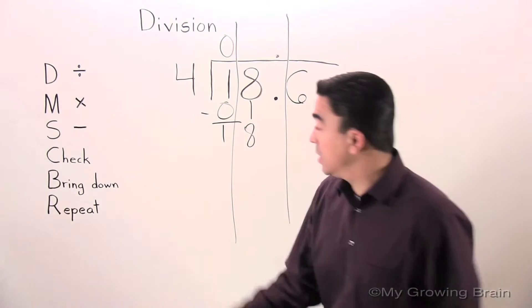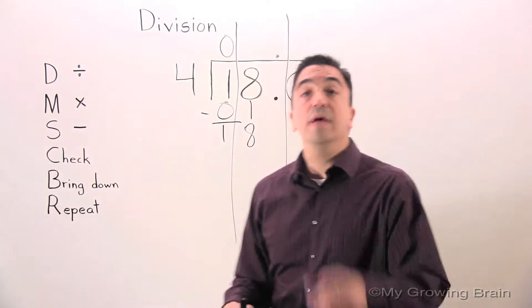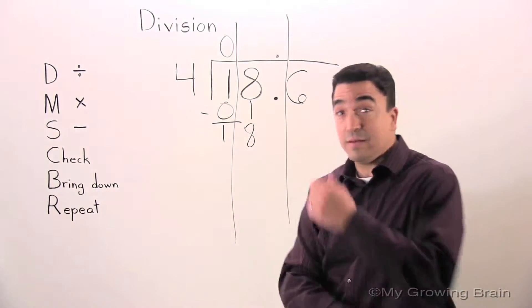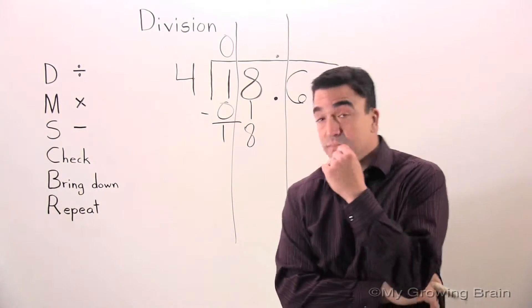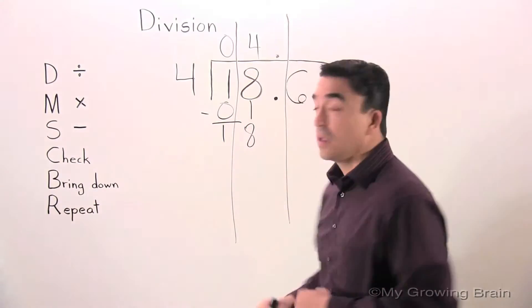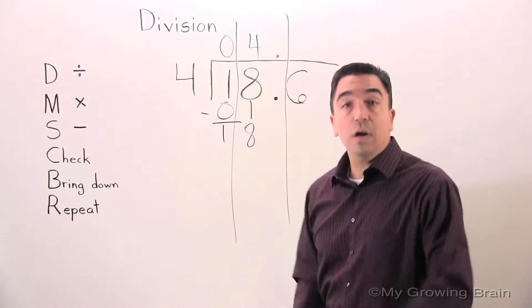Next step: repeat. Repeat the whole process. Go back to the top. Divide. 18 divided by 4 or 4 into 18 is 4. Multiply. 4 times 4 is 16.